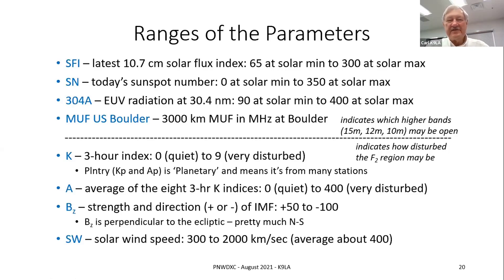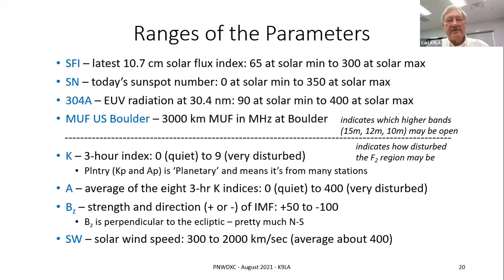The 304A parameter is the extreme ultraviolet radiation — that's the true ionizing radiation of the F2 region, which is the most important region for long-distance DX. At solar minimum it's around 90 and can go up to 400.